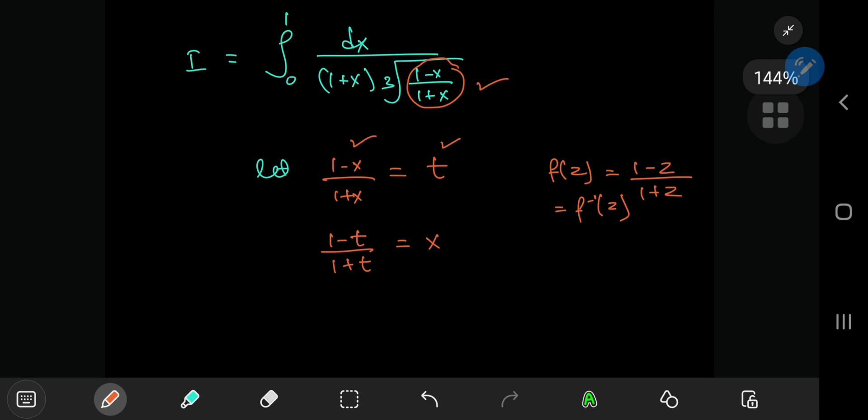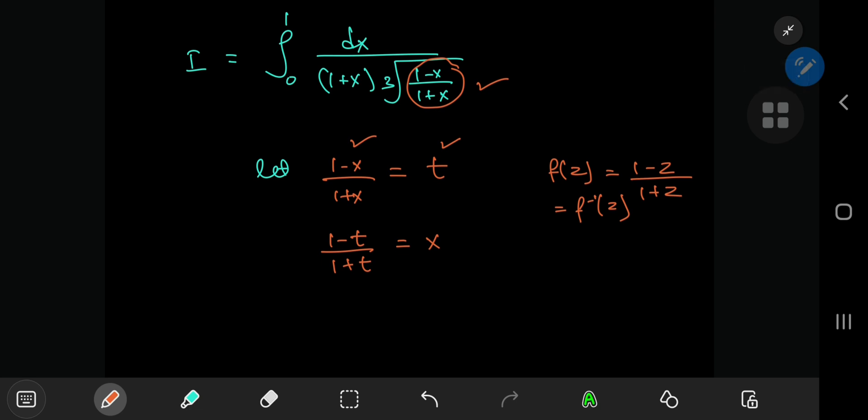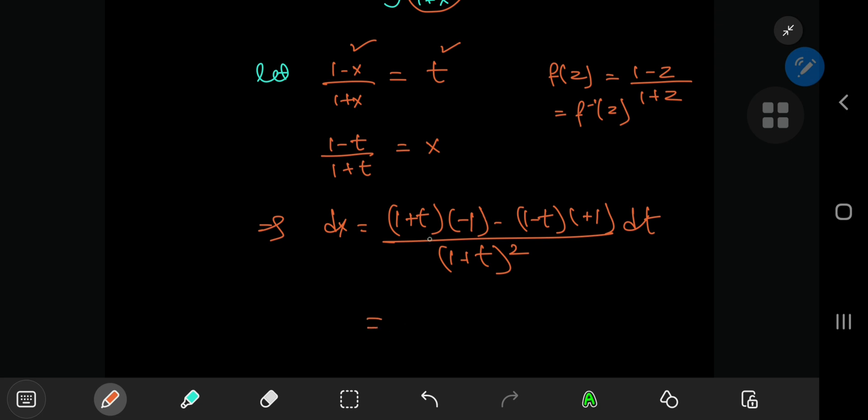Taking the differential element from the x world to the t world is really easy. Because of our substitution, it implies that dx equals 1 plus t times negative 1 minus 1 minus t times positive 1 divided by 1 plus t squared dt. On simplification, you have negative 1 minus t minus 1 plus t, which cancels out nicely and you're left with a negative 2 dt divided by 1 plus t squared.